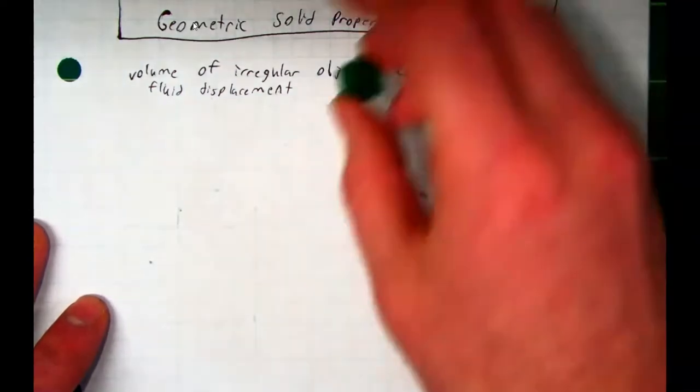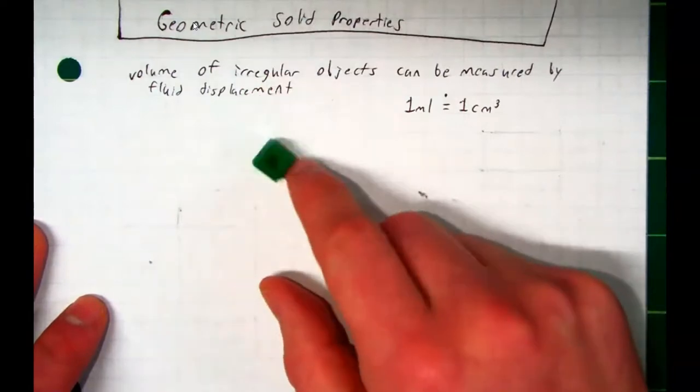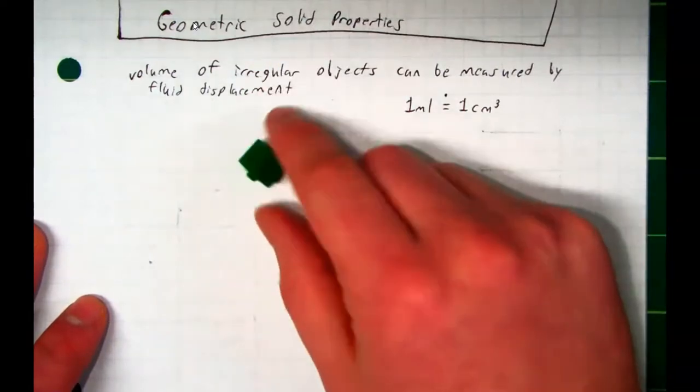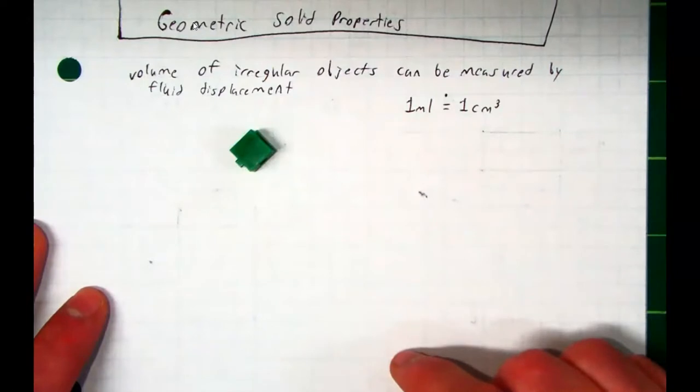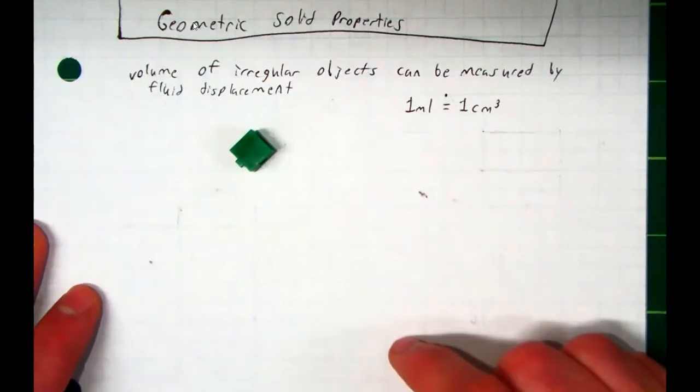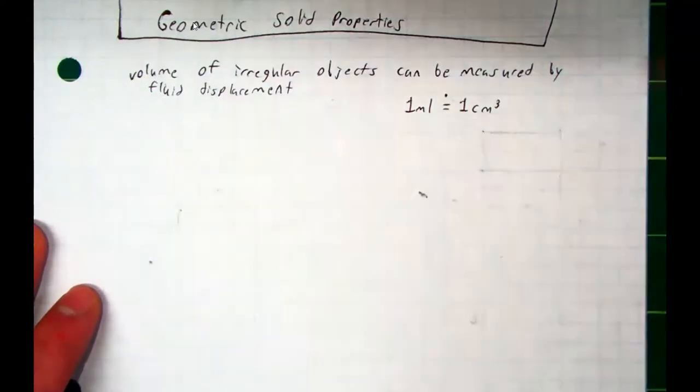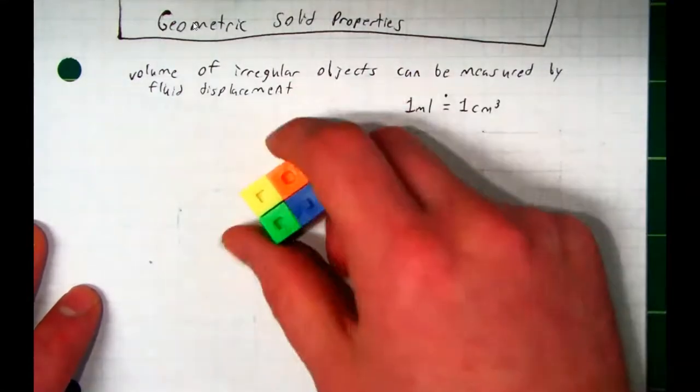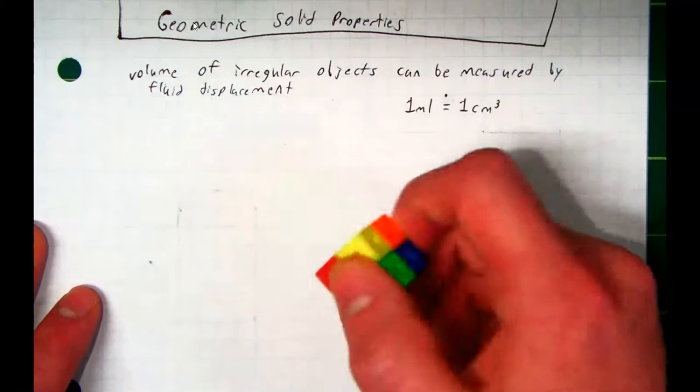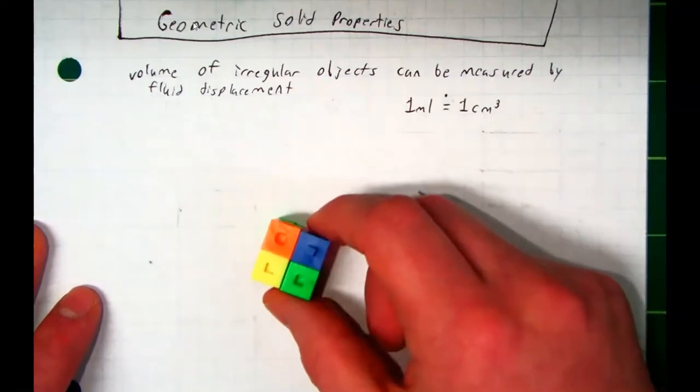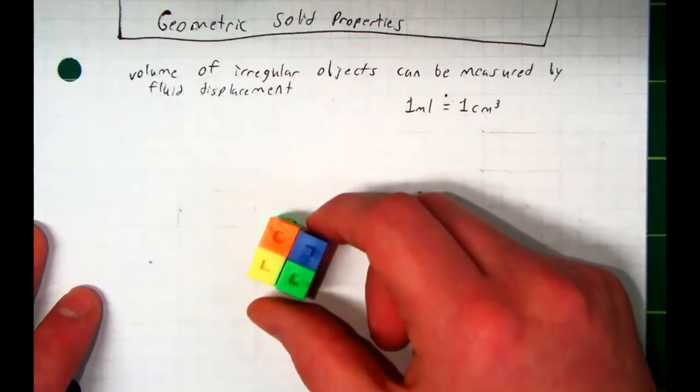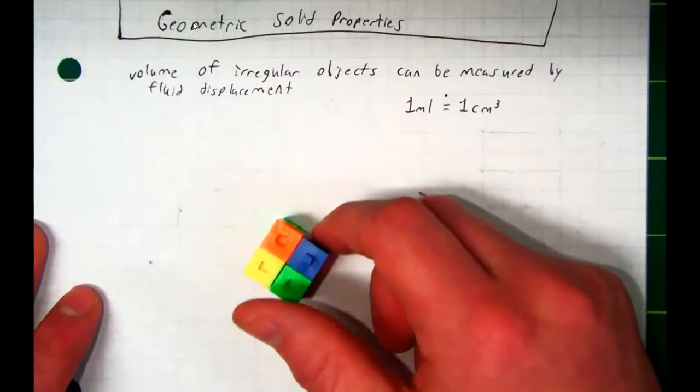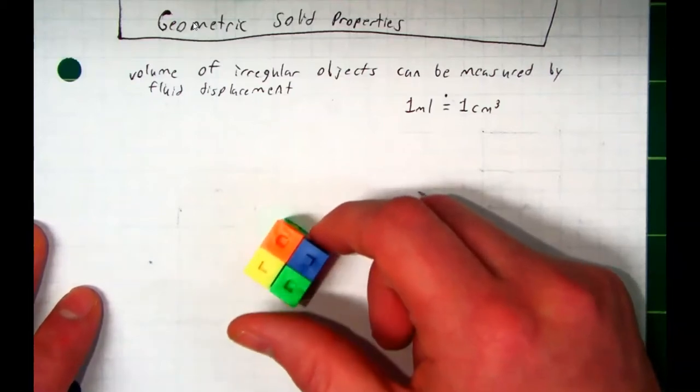In other words, if I drop this in a cup of water, it would go up, since it's one centimeter cubed, it would go up exactly one milliliter. This is eight centimeters cubed. If I drop this in 50 milliliters of water, what would be the height of the water now? 58 milliliters. Because math. Pretty cool, huh?